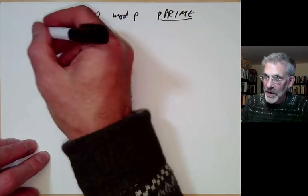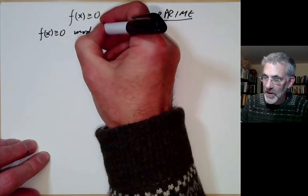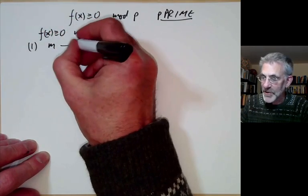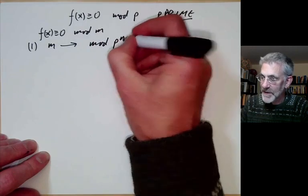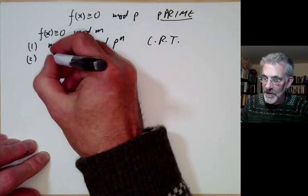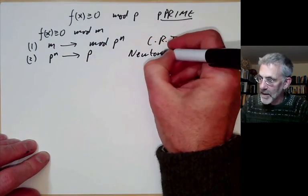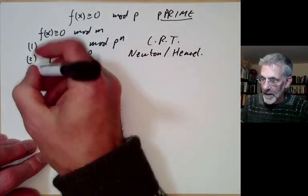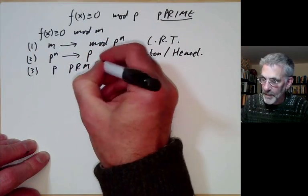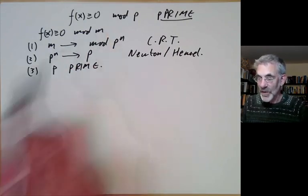As background, we've considered equations f(x) ≡ 0 mod m for m an arbitrary number. We first showed we can reduce the case when m is arbitrary to the case of working modulo p^n using the Chinese remainder theorem. Next, we can reduce the case of working mod p^n to the case of working mod p most of the time using Newton's method or Hensel's lemma.